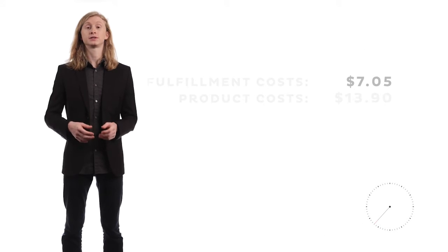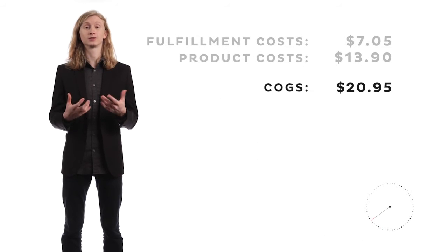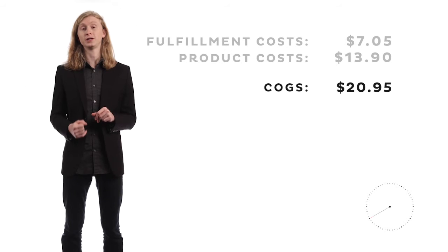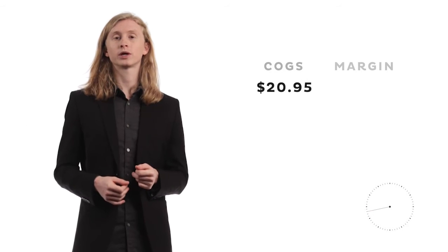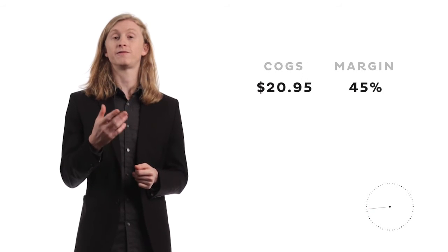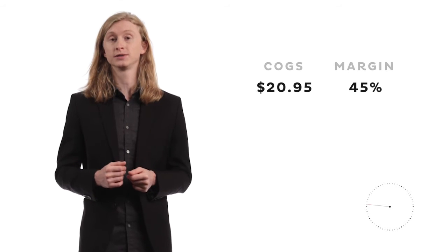When we add our product costs and our fulfillment costs together, we end up with our COGS, which means we're almost ready to price our subscription box. Generally, we want to be working with a 40–45% profit margin after your COGS.